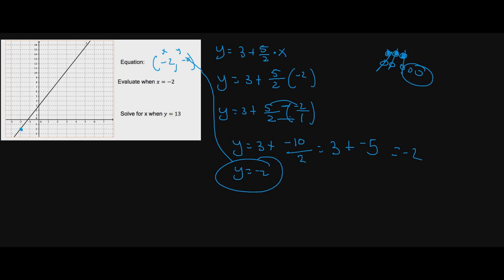Now let's solve for x when y equals 13. When y is 13 on the y-axis, drawing a horizontal line shows it touches the graph at x equals positive four. So when y equals 13, x equals four. Let's use the equation to verify this.